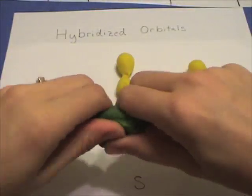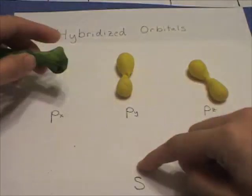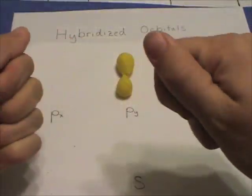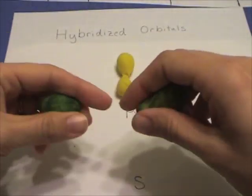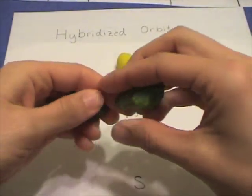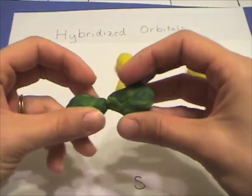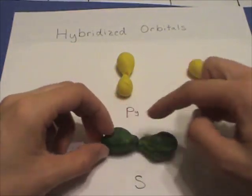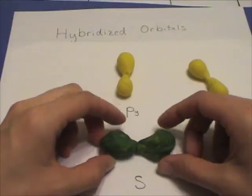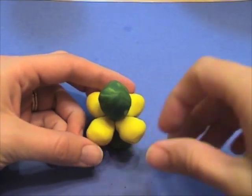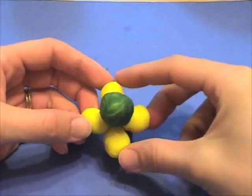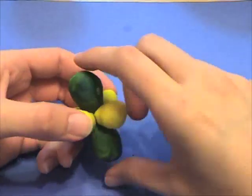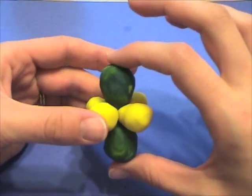If we take a p orbital and an s orbital and hybridize it, we can form two sp orbitals. These two sp orbitals get as far away from one another and form a 180 degree bond angle — linear. The two empty p orbitals are actually perpendicular to one another at 90 degree angles with this hybridized sp orbital.